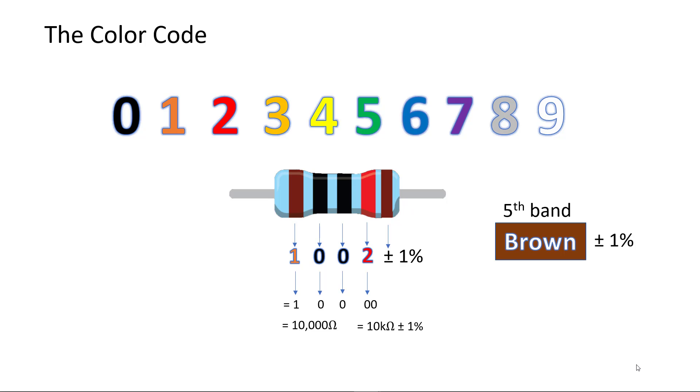The final brown band denotes a tolerance of 1%. Brown is the most common final band for 5-band resistors. You may encounter other colors, but in that case consult the manufacturer to determine the tolerance.